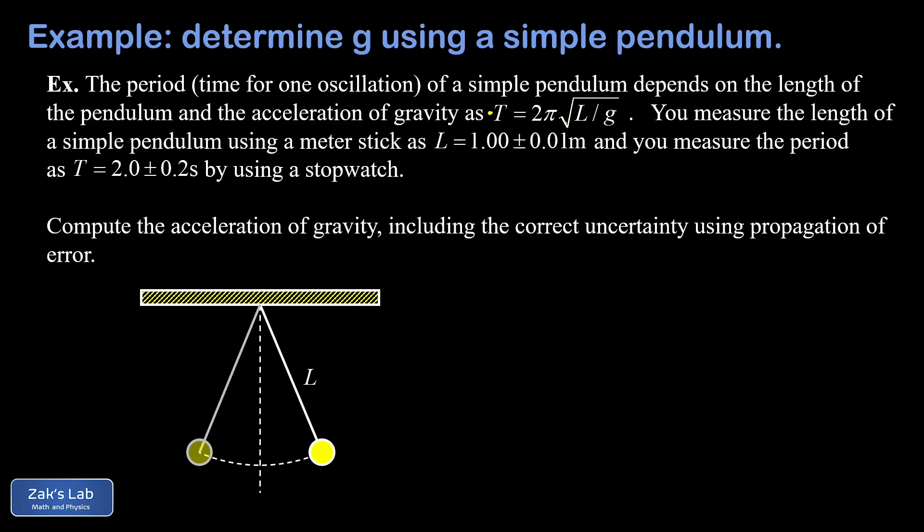The period is 2π square root L over g. We've measured the length to a known precision, so it's 1.00 plus or minus 0.01 meters. And we've measured the period of oscillation, in other words the time to go back and forth, as 2.0 plus or minus 0.2 seconds.